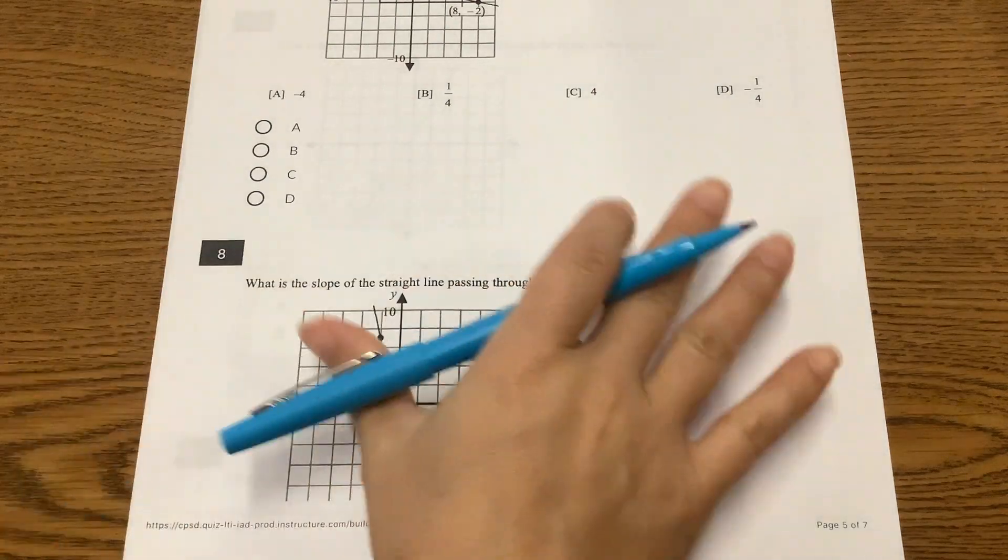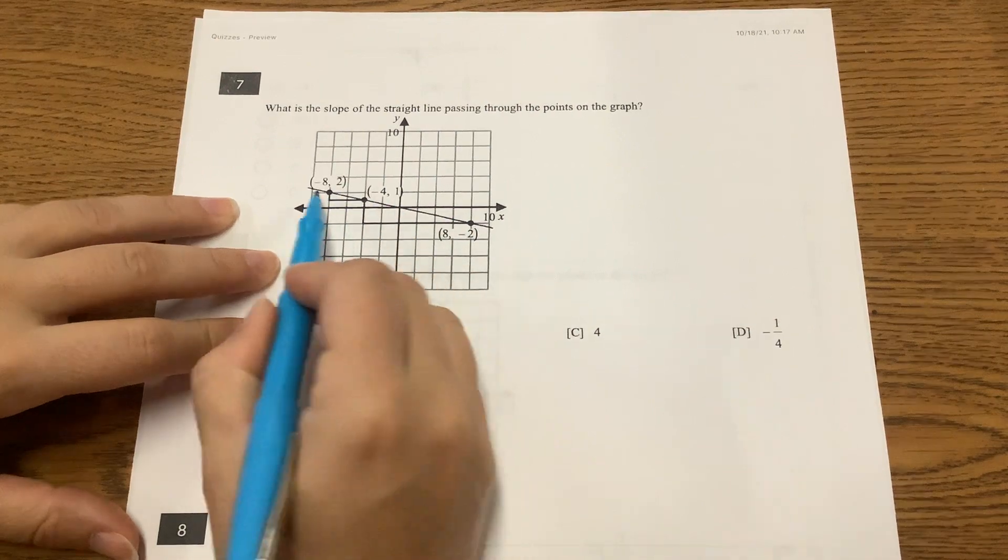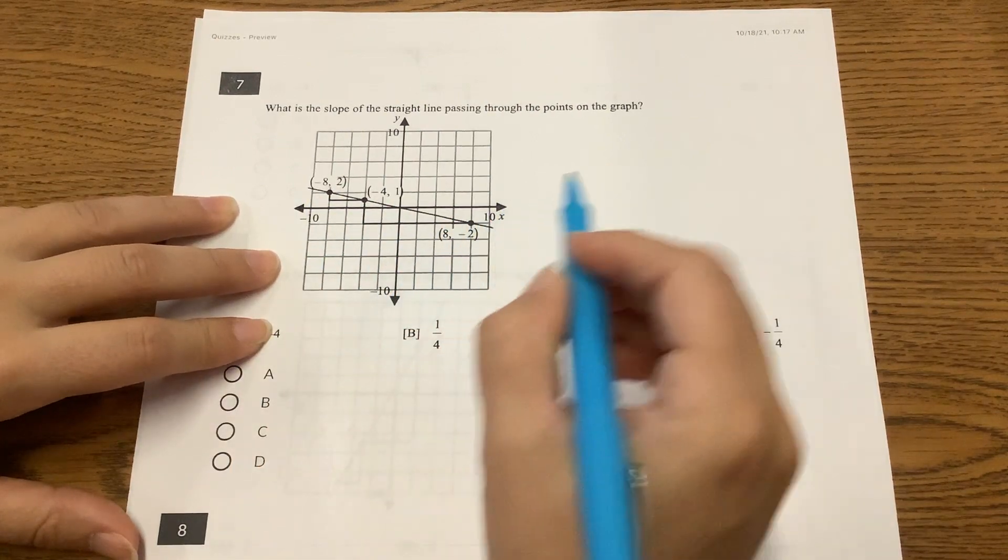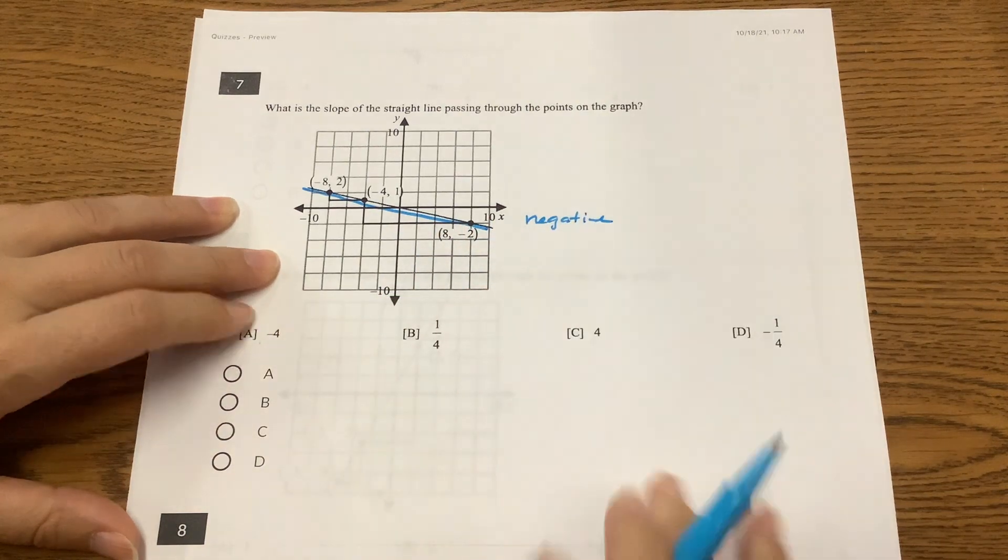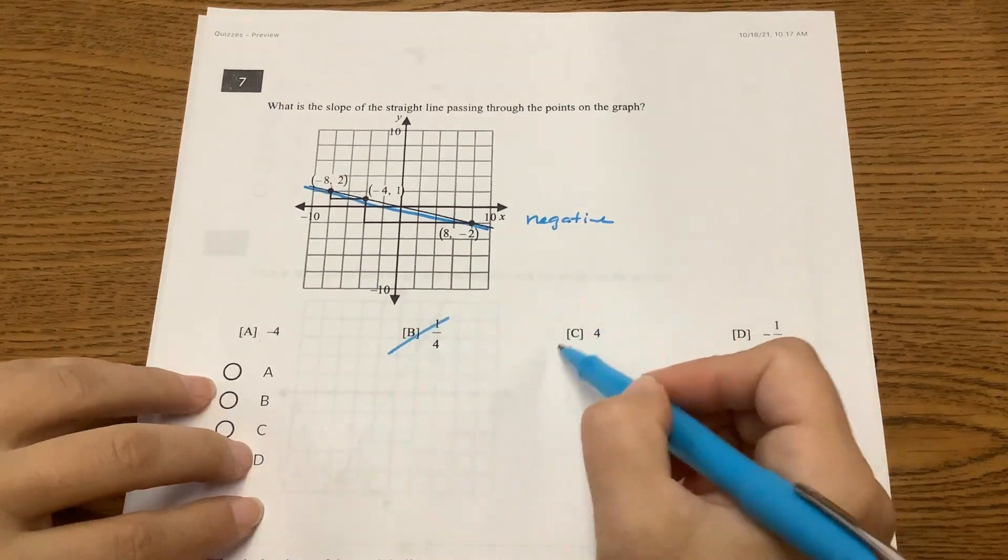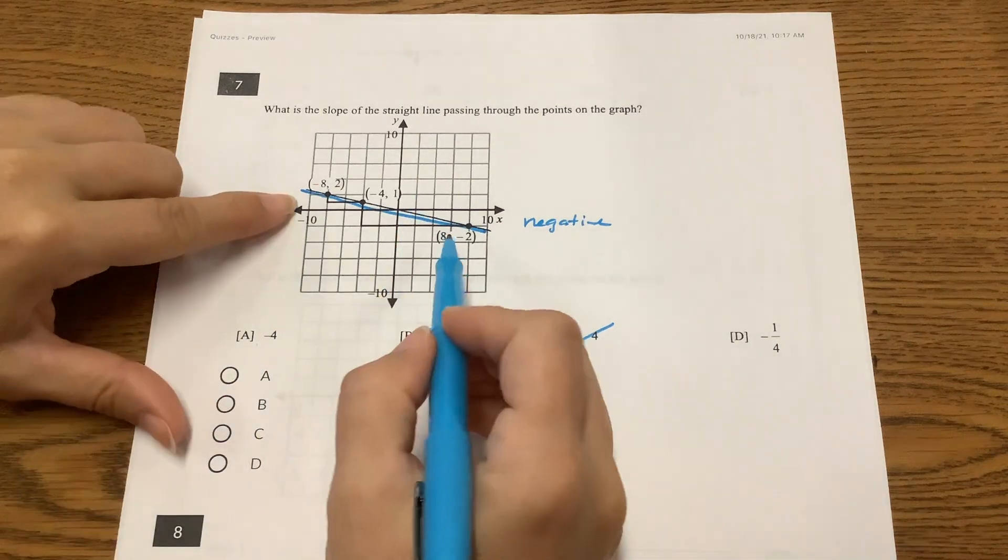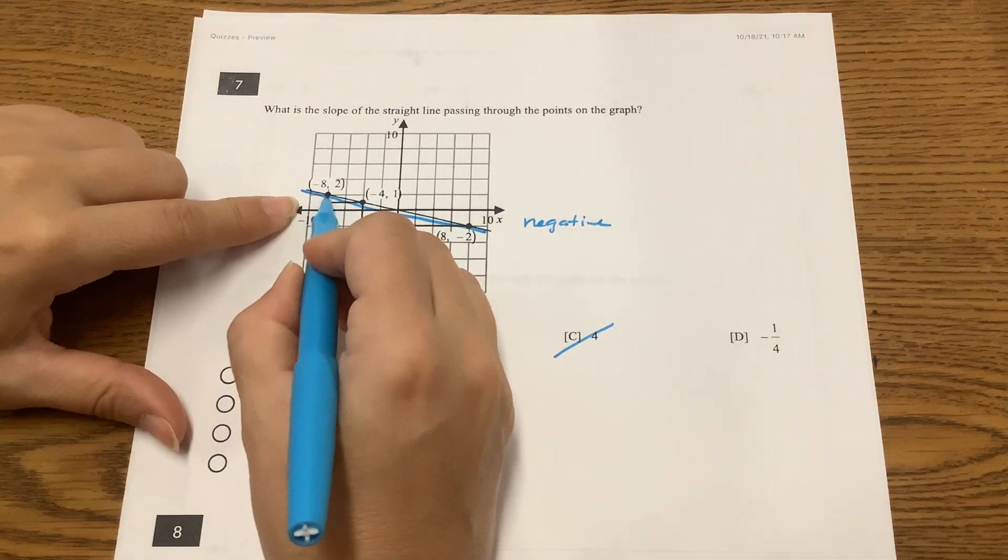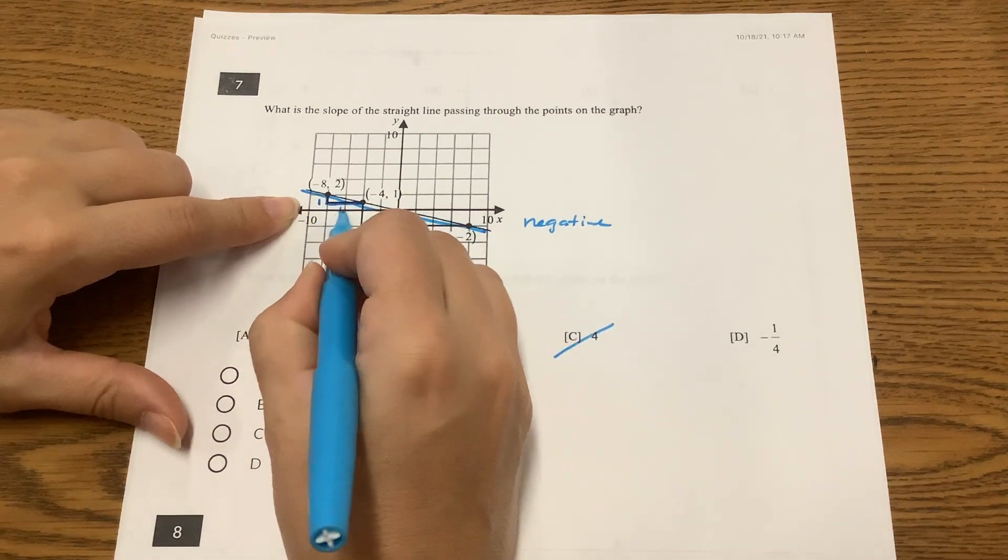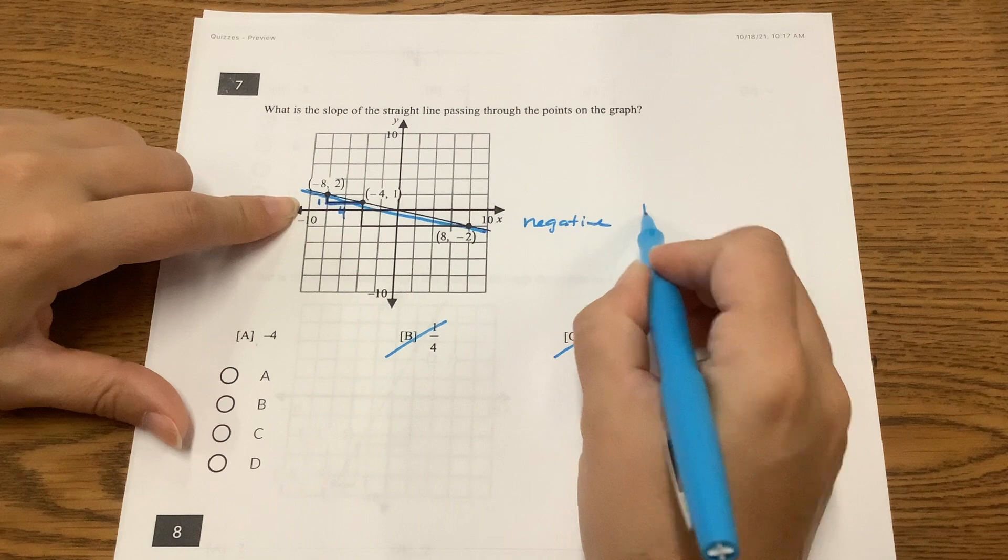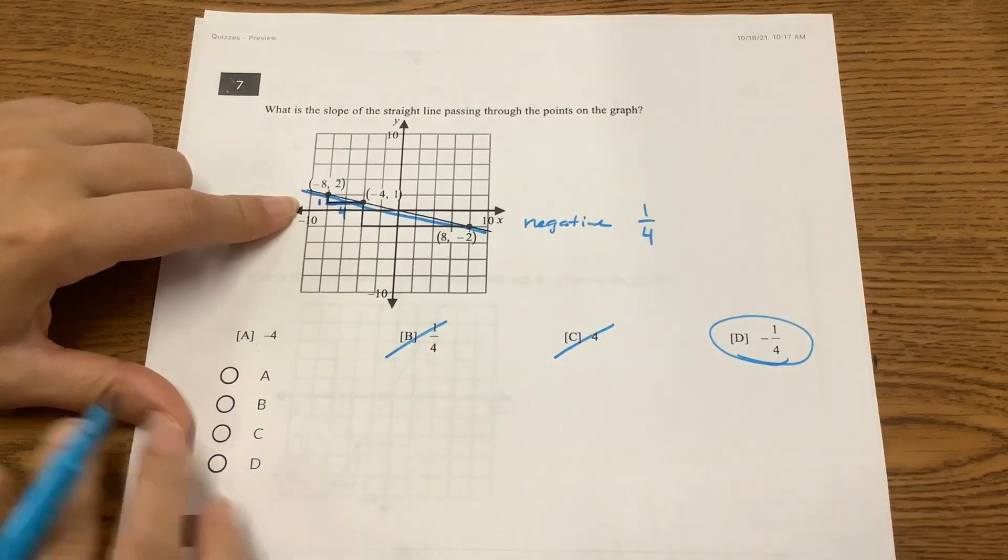For number 7, okay, so we see that this line is leaning in the opposite direction, so we know that there is a negative slope. Okay, so we can eliminate some of our answer choices. We know it's not B and we know it's not C. So we know it's going to be between A or D. Now, if we look at our slope triangles that they created for us, this is halfway across, so that's a length of 1. And then it's two full squares across, which is the length of 4. So that is negative 1 over 4. So the correct answer choice is D.